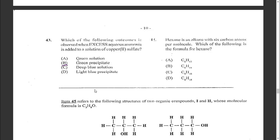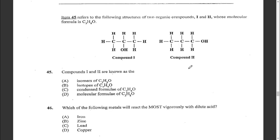Question forty-four: hexane is an alkane with six carbon atoms per molecule. Which is the formula for hexane? Alkanes follow CₙH₂ₙ₊₂. For hexane (n = 6): C₆H₁₄. 6 carbons give 12 + 2 = 14 hydrogens. The answer is B.